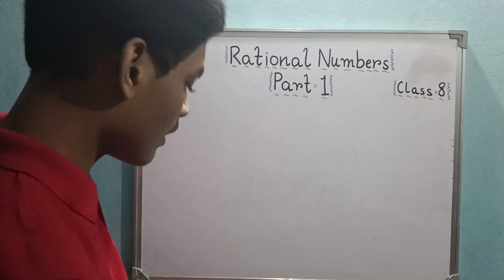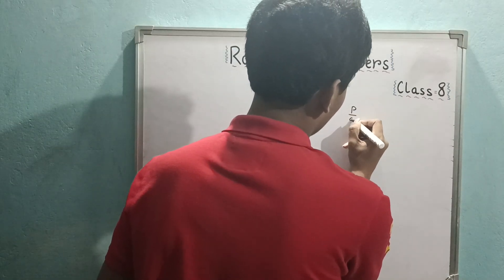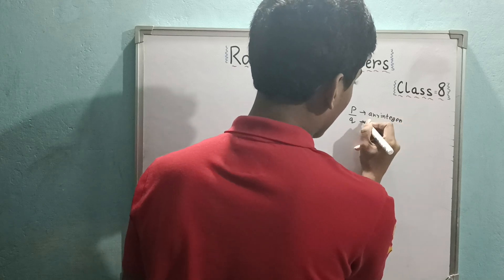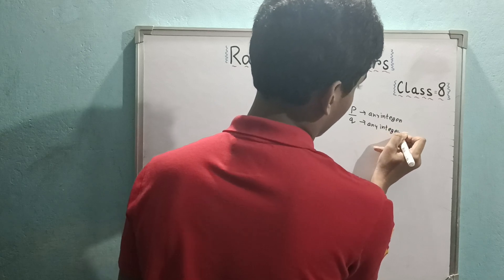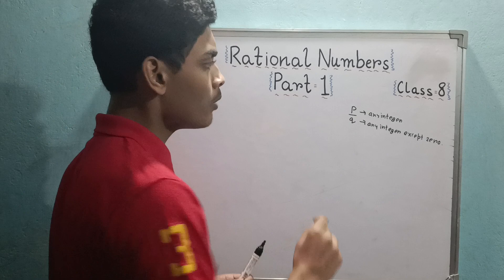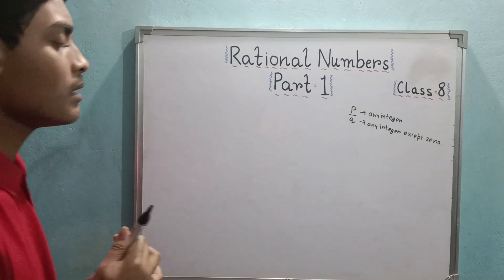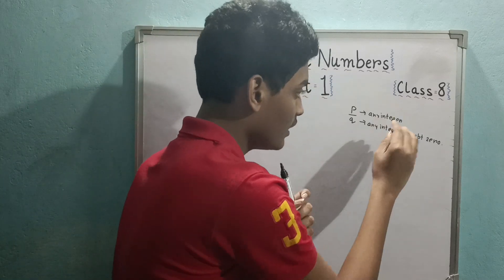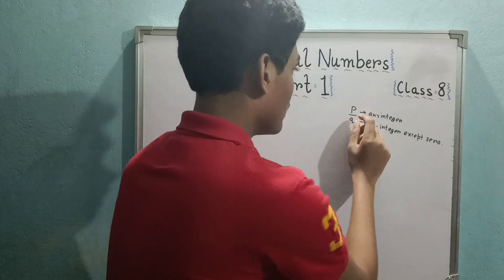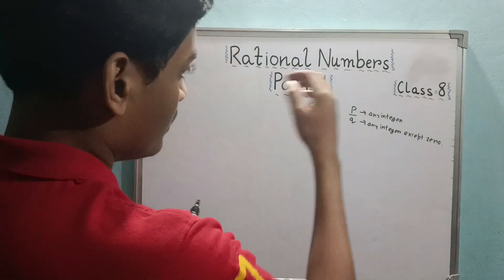Rational numbers are actually a type of fraction. They are expressed in the form p by q, where p can be any integer and q can also be any integer except zero. P and q have to be definite numbers — they can't be infinite. P's value can be zero, but q's value can't be zero. The denominator of a rational number can never be zero — it is undefined.